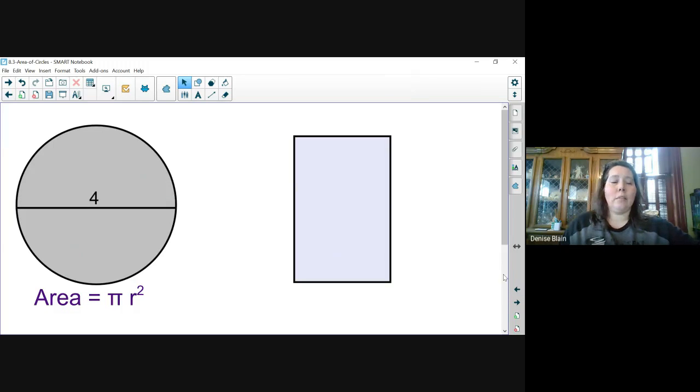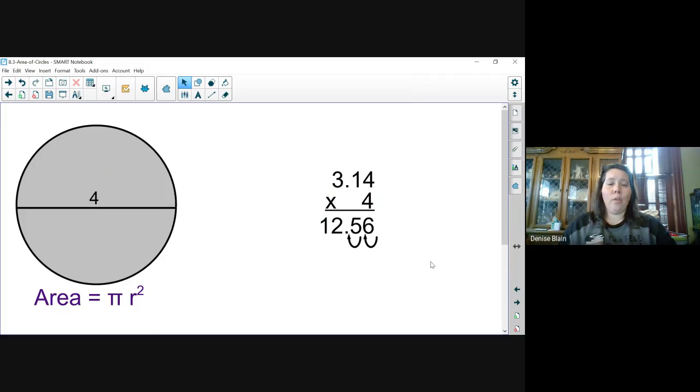Our next example is a circle whose diameter is 4 units. Again, we have to take our diameter and divide it by 2. When we divide 4 by 2, we get 2. So 2 squared... 3.14 times 4 is going to give us 12.56 hundredths of a unit. If we were to round this to the nearest tenth, it would round to 12.6 units.